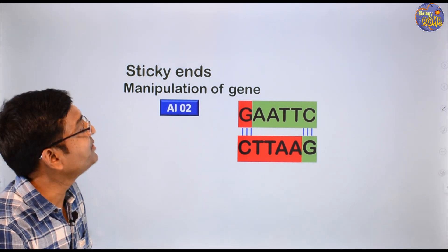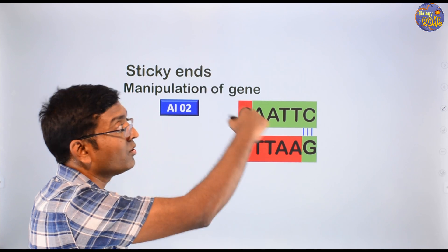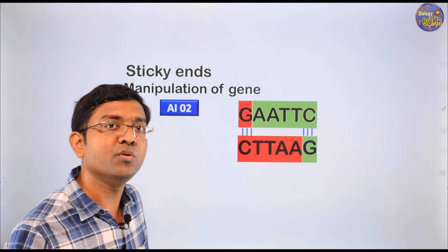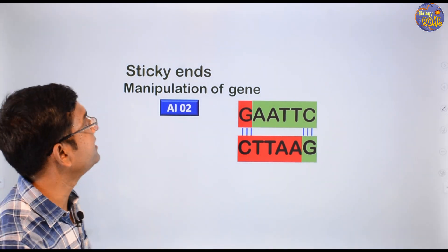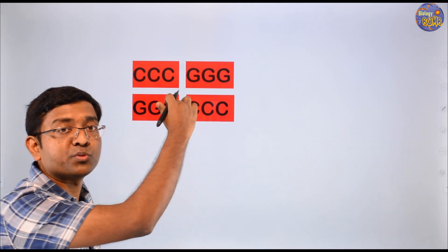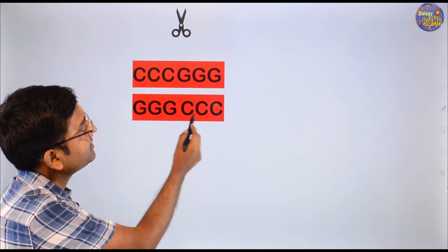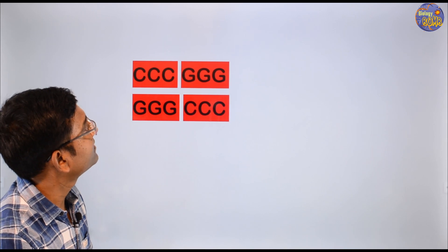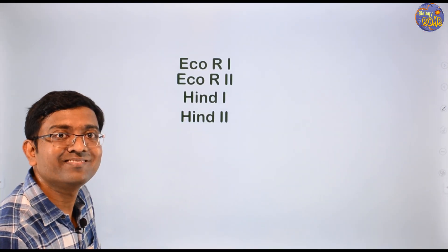Restriction endonuclease is used for the manipulation of genes. We cut one DNA and another DNA, then attach them — that's how we manipulate the gene. Restriction endonuclease cuts the phosphodiester bond and hydrogen bond. For example, the palindromic sequence CCCGGG — restriction endonuclease beautifully cuts it. That's how restriction endonuclease cuts the DNA.